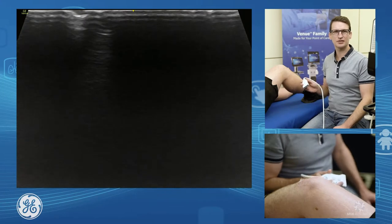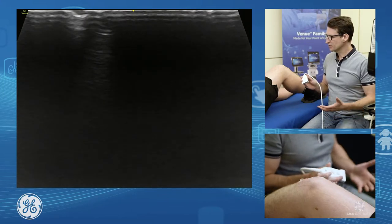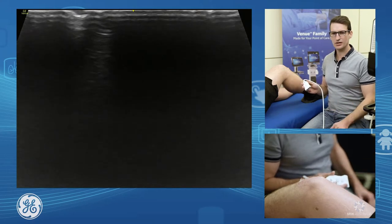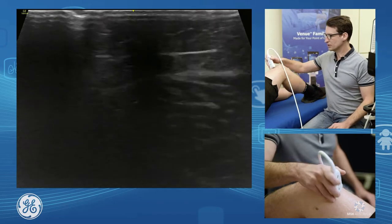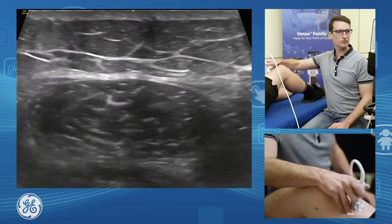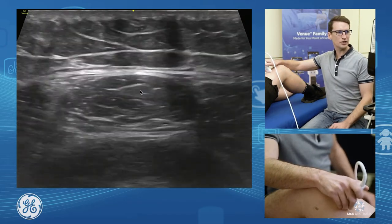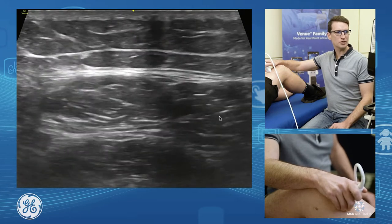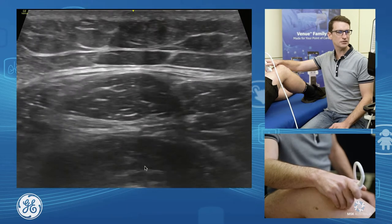We're going to discuss the anterior knee, the quadriceps and patellar tendons. The quadriceps tendon is a common tendon and quite often has three layers. We're going to start up and find our quadriceps muscle. We have our rectus femoris muscle in the middle, vastus medialis, vastus lateralis, and vastus intermedialis.